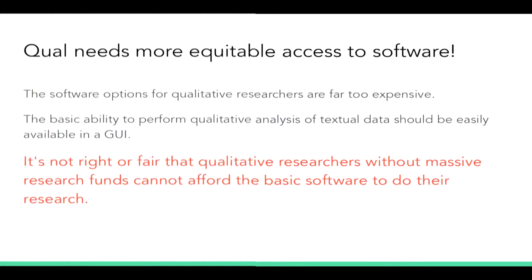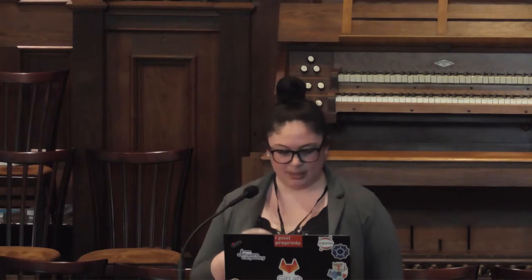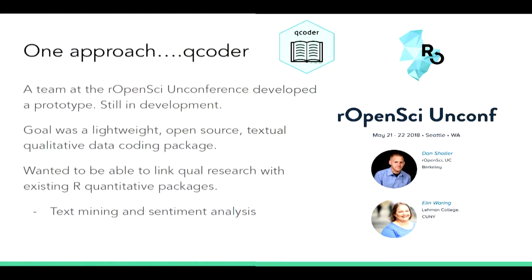The problem we tried to solve is that qualitative researchers need more equitable access to software. The options are far too expensive. The ability to highlight text and tag it should be really easily available in a GUI, and it's not fair that qualitative researchers without massive funds can't afford the basic software to do their research. We're going to describe our two approaches — Qcoder and Tagit.